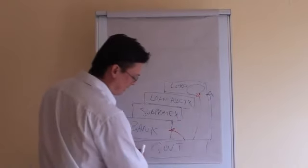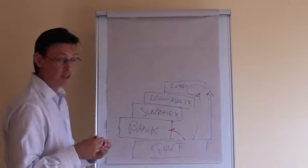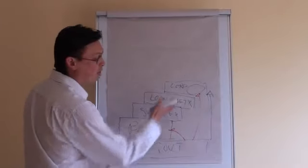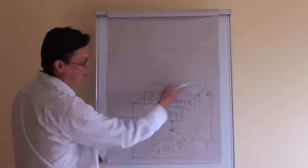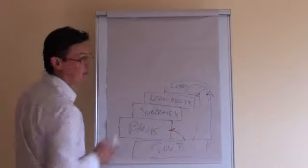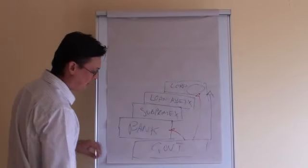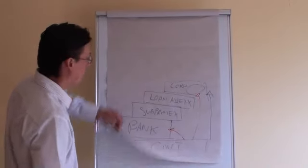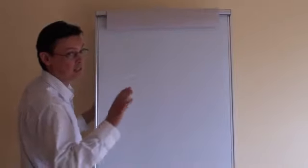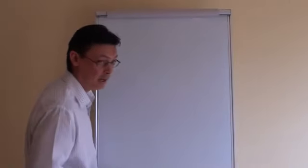So what they've done is the government, which is already in a lot of debt, has taken on more debt to fund failing entities, or entities that have made bad decisions. So that's basically how it all happened, how it all began.